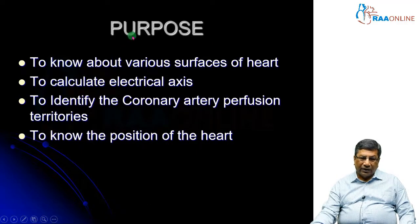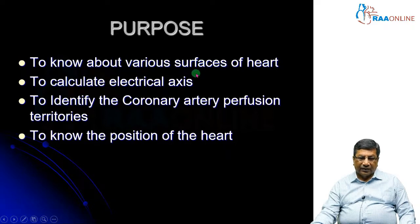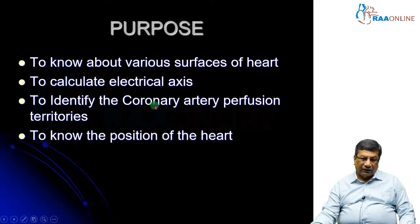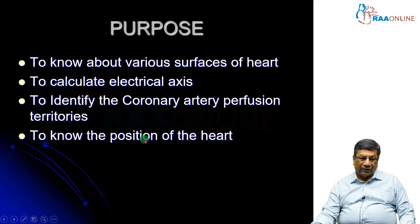Why do we have to learn about the lead system? The primary purpose is to look at the various surfaces of the heart, so I must have a method by which I can look at each surface. Second, I must know in which direction my net cardiac impulse is traveling — that is the calculation of electrical axis. Third, if the patient is presenting with acute coronary syndrome, especially with ST elevation myocardial infarction, I must know which coronary artery is likely occluded and what portion of the heart is involved — whether it is horizontal, vertical, or intermediate.